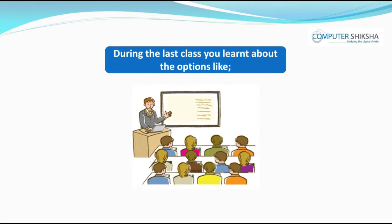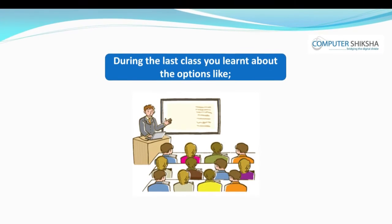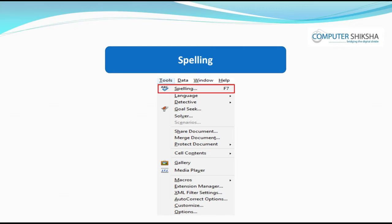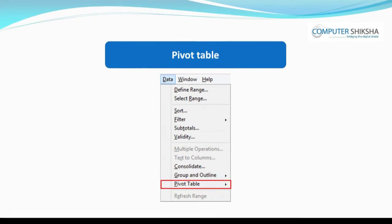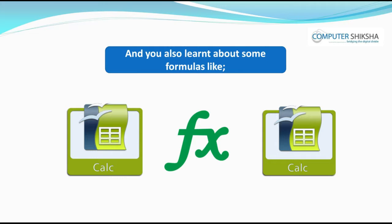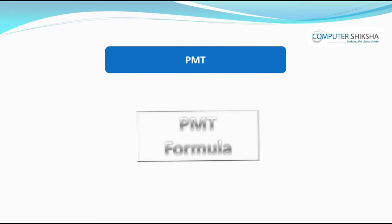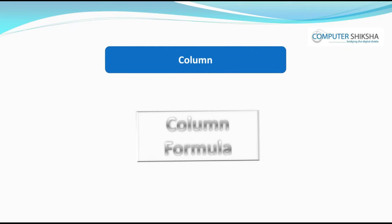During the last class, you had learned about options like spelling, goal seek, pivot table, etc. You also learned about some formulas like PMT, PV, Offset, Column, Row, Address, etc.